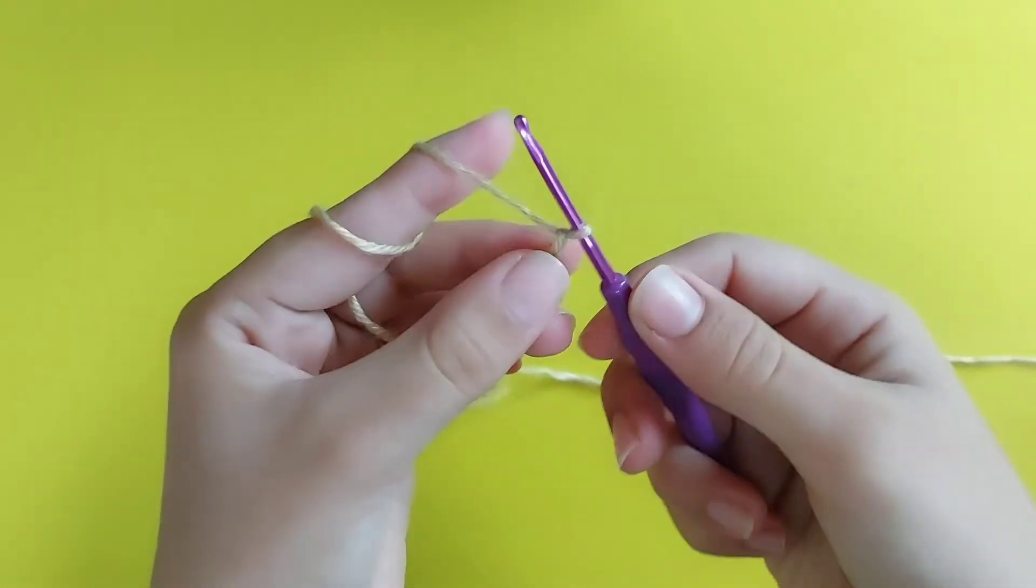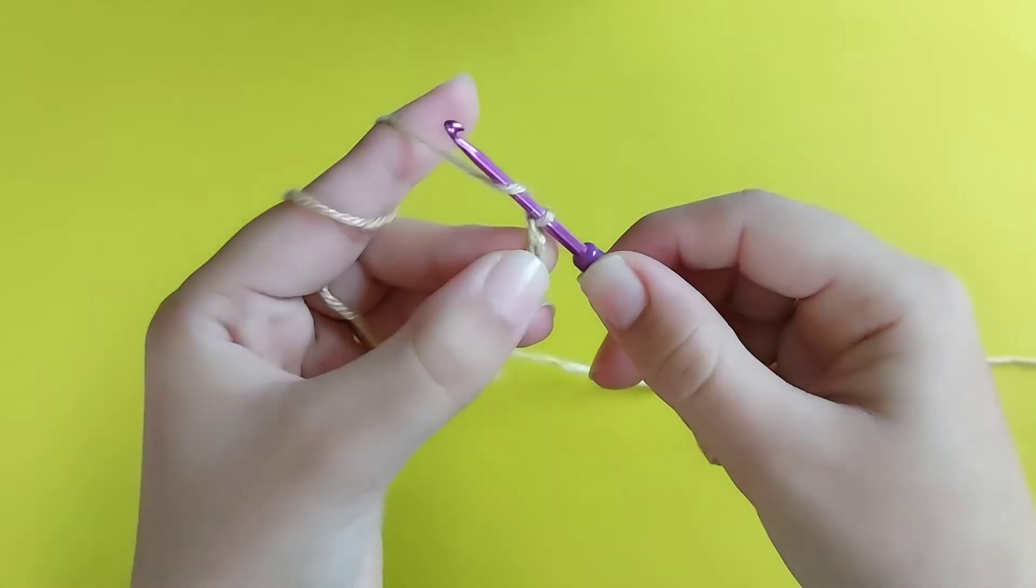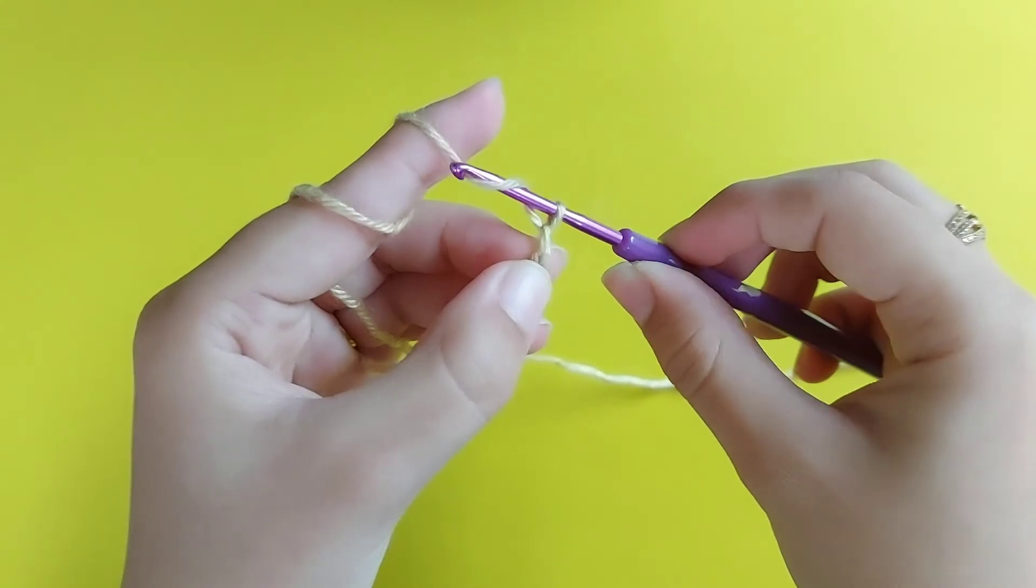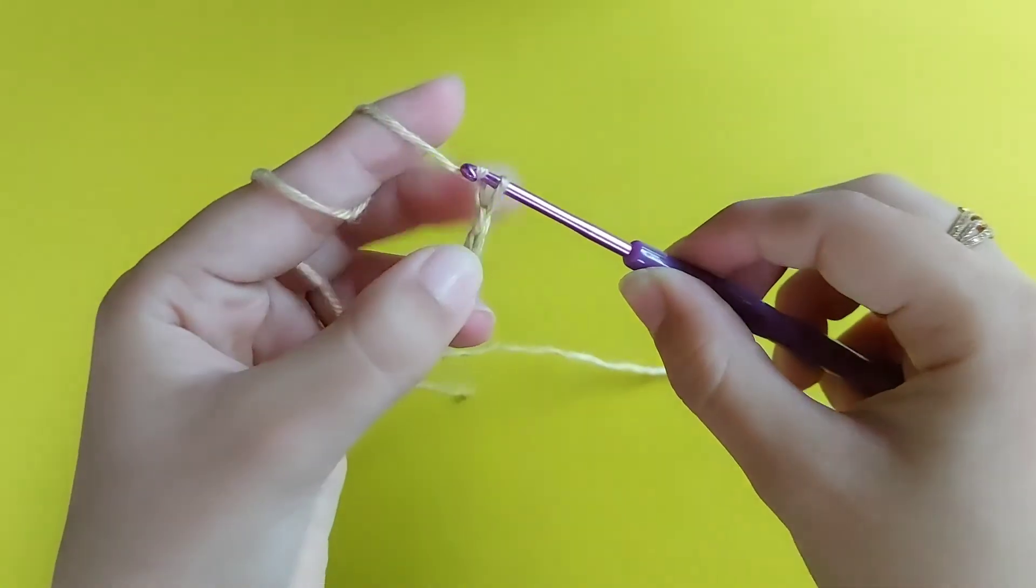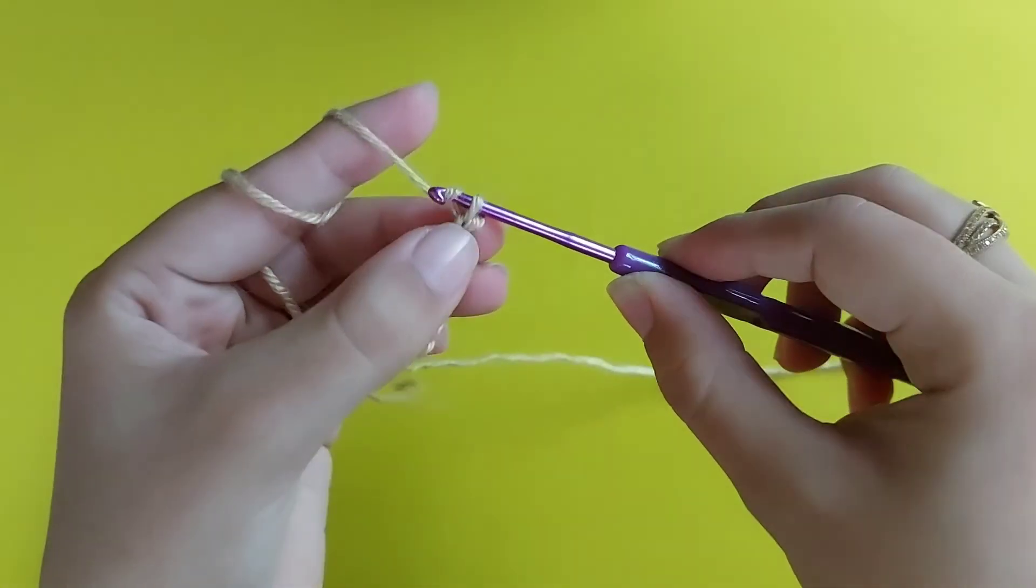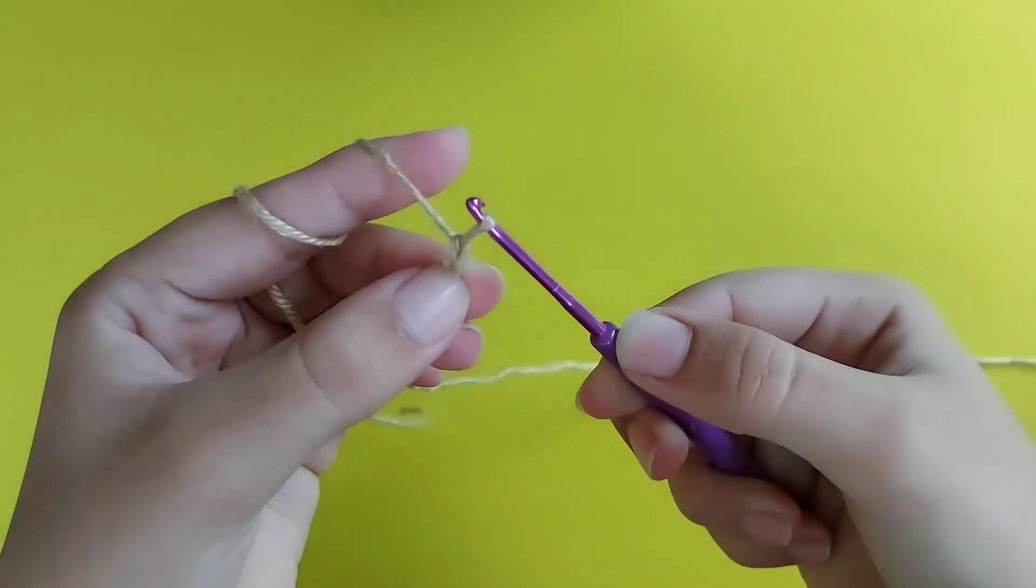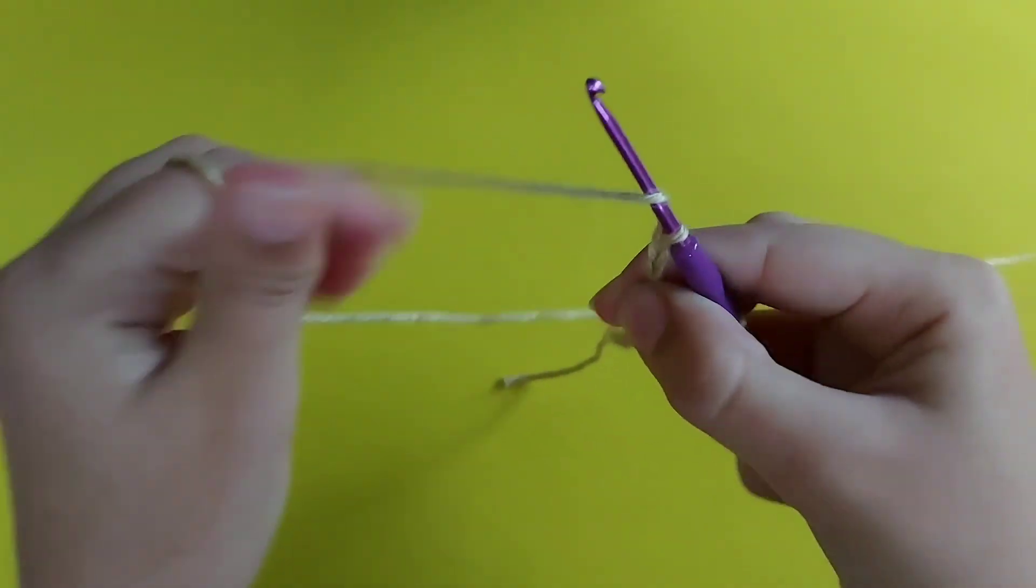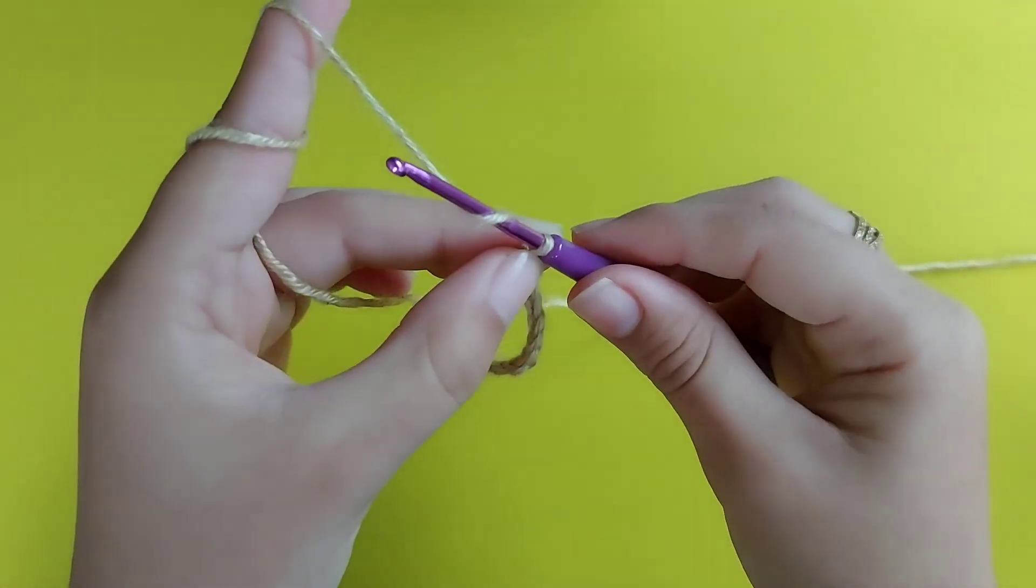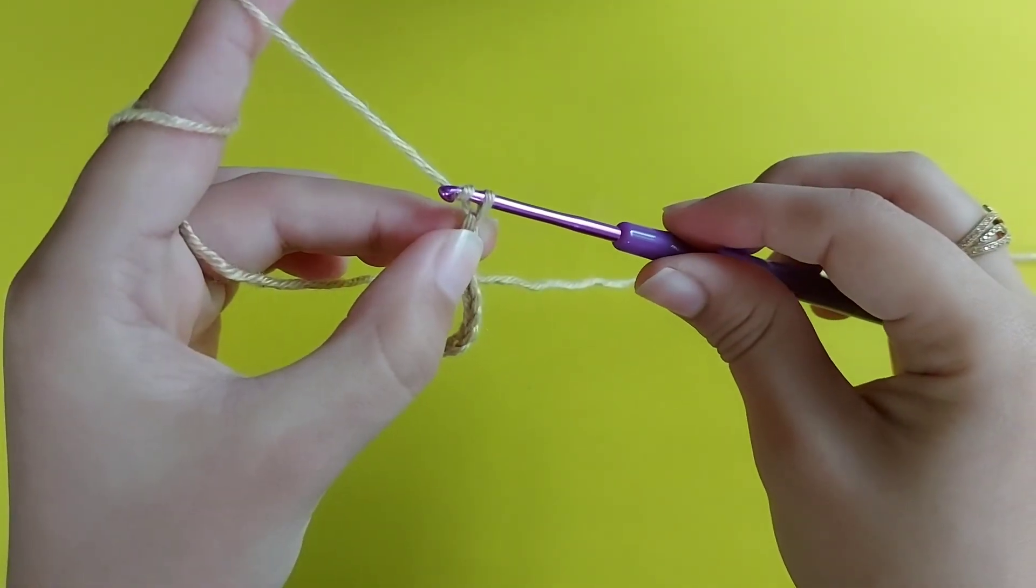The chain will be created the same way each time. The crochet hook has a loop, and the chain will be formed from the loop.